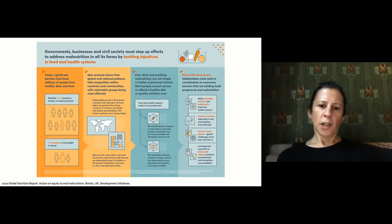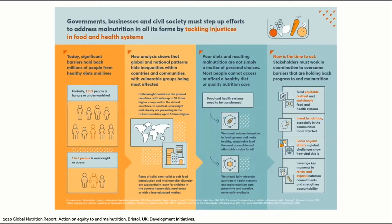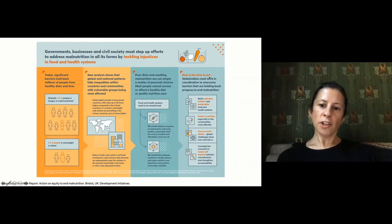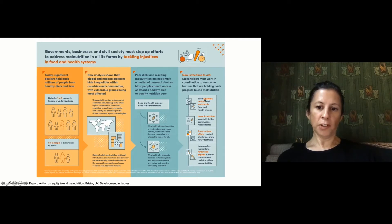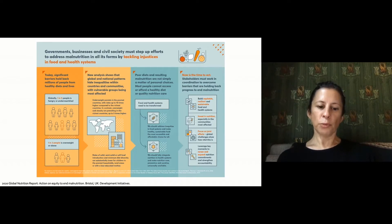The Global Nutrition Report talks about the need to tackle social determinants that lead to inequities and injustice. There are many barriers that hold people back — inequities within countries, communities, and households leave many people vulnerable. The report argues it's time to act: we need coordination to build better sustainable food and health systems, invest more in nutrition, focus on joint global-to-national efforts, and expand commitments while strengthening accountability. I highly encourage you to read it.